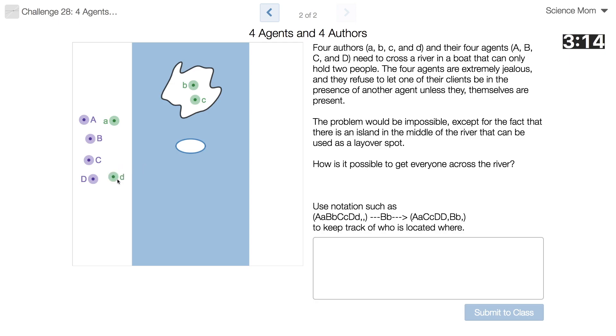Then D can come back and that's fine because the agent's there. And A and D could get in the boat. So now we have all the authors out of the way. Okay.